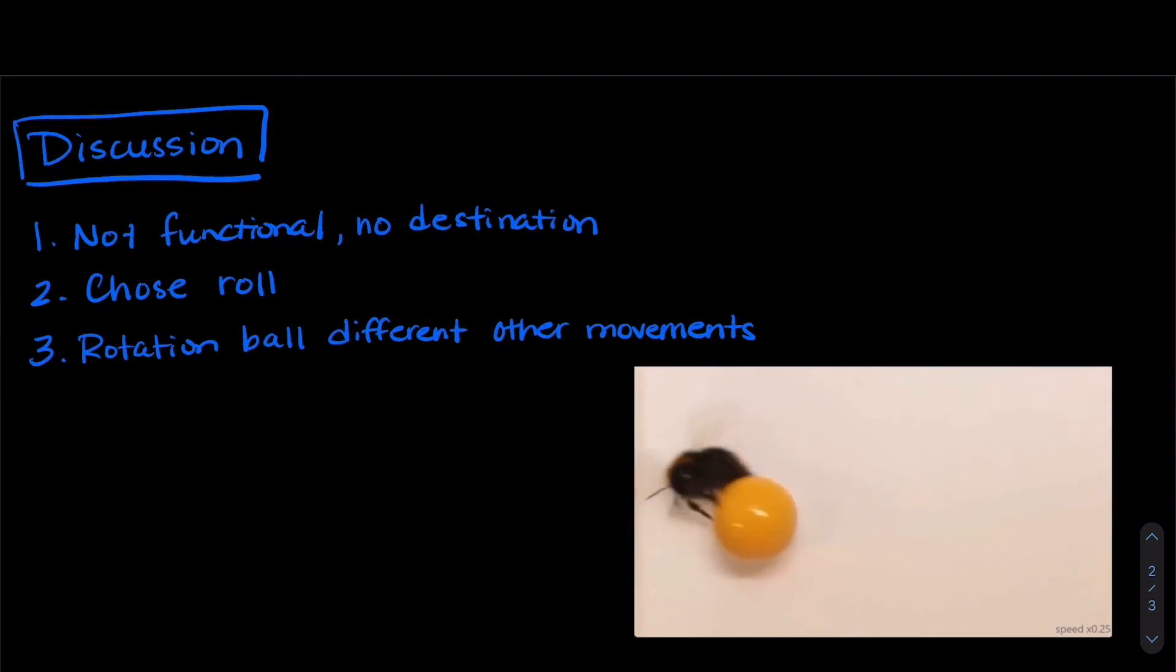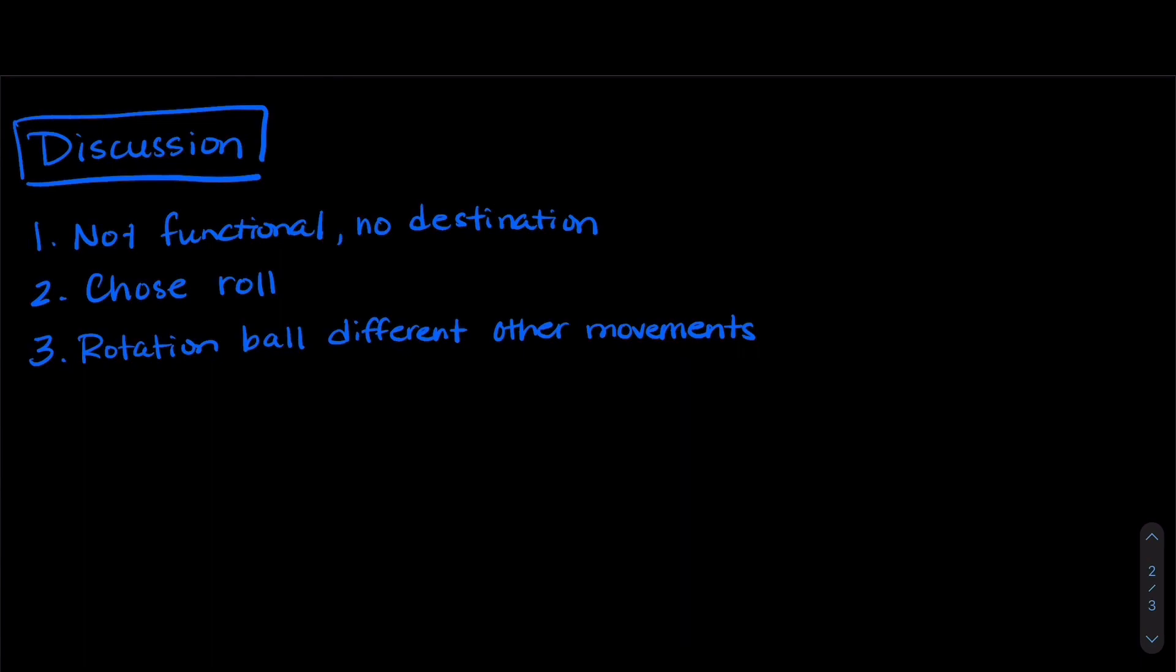And they didn't actually roll any faster as the experiment went on, which a lot of animals do with functional tasks like eating or trying to find things. The animals get better at them as time goes on. But that's not the case with play. And they didn't see that with our bees.